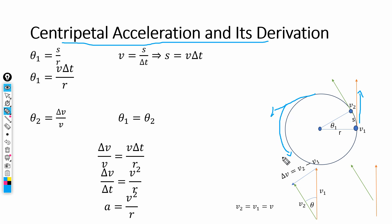When the object is rotating along the circular path, the direction of velocity is changing, which means there is a change in velocity — but there is no change in speed. Velocity is a vector quantity with magnitude and direction, while speed is a scalar quantity. The magnitude remains the same; only the direction changes. That is why we have a change in velocity but no change in the speed of the object.